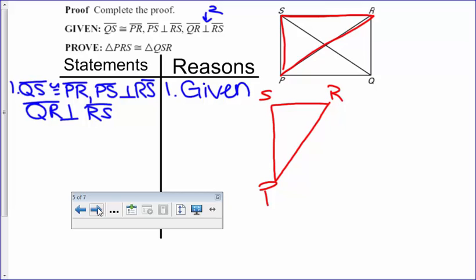And then triangle QR, I'm sorry, QSR, go that way, is the other triangle that we're trying to prove that's congruent. So let's take a look at what they give us in the given because actually nothing is marked on our diagram.